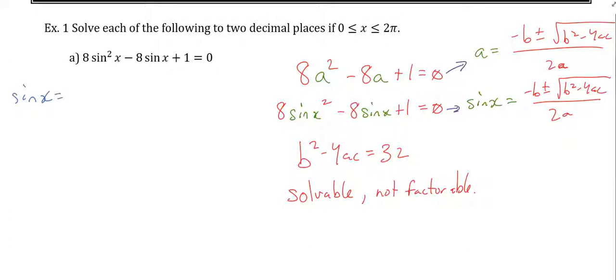Sinx = -b, which is the negative of -8, which I wouldn't normally write, I would just put 8, but for the first time we'll do it the whole way. Plus or minus the square root of b², which is (-8)², minus 4 times 8 times 1. So (-8)² is 64, minus 8 times 4 which is 32. 64 - 32 is 32. All over 2 times a, which is 8.